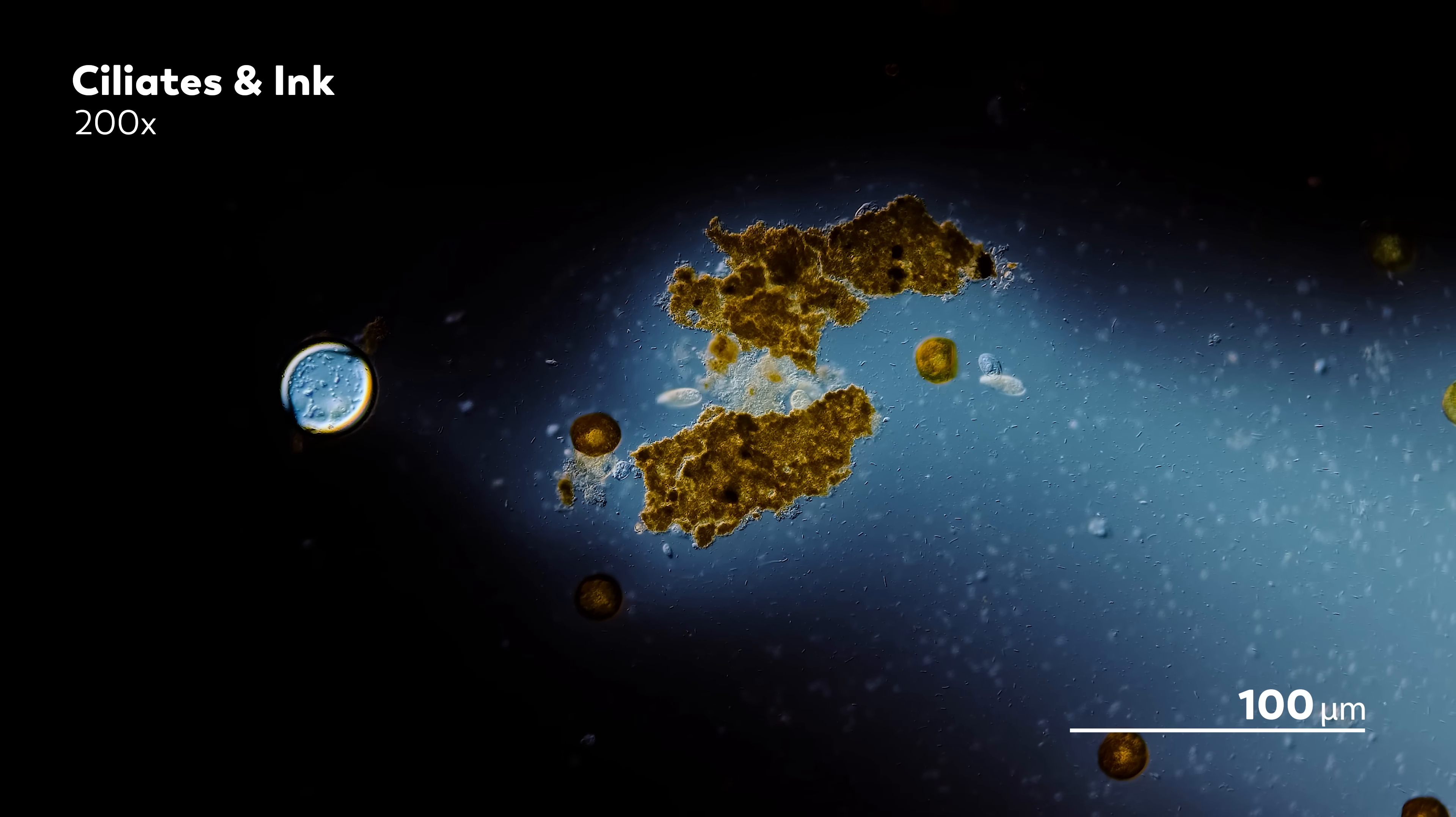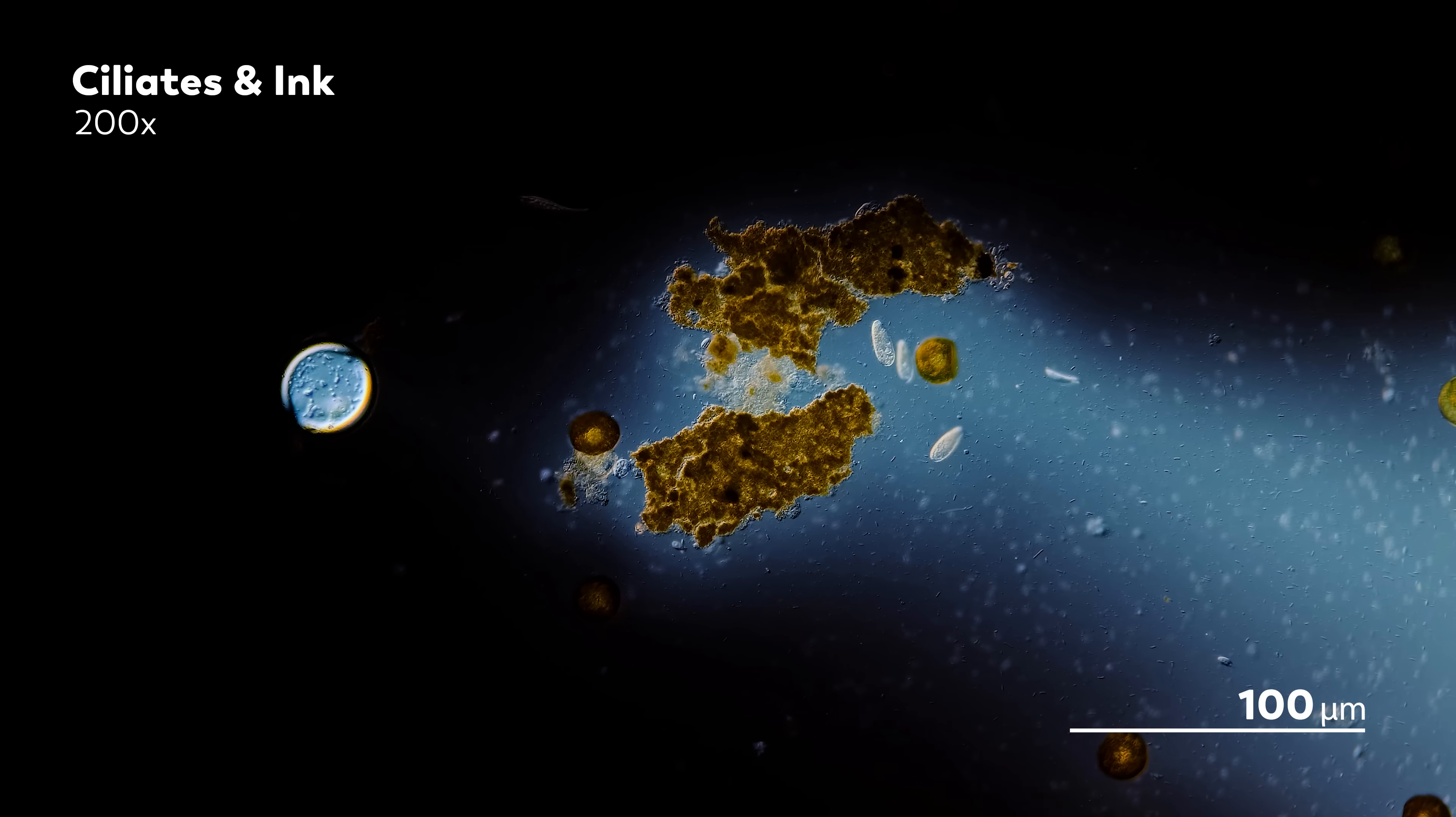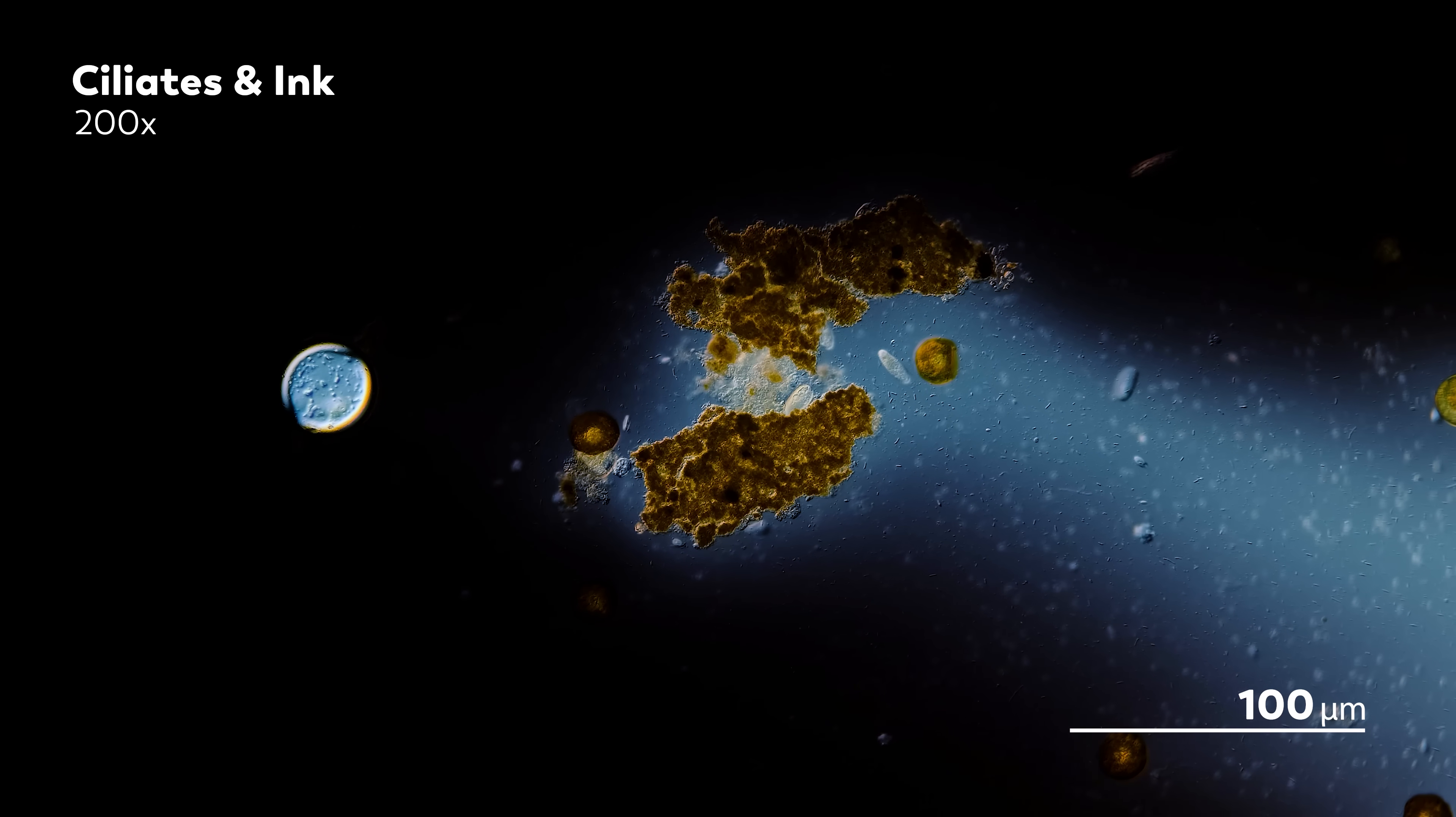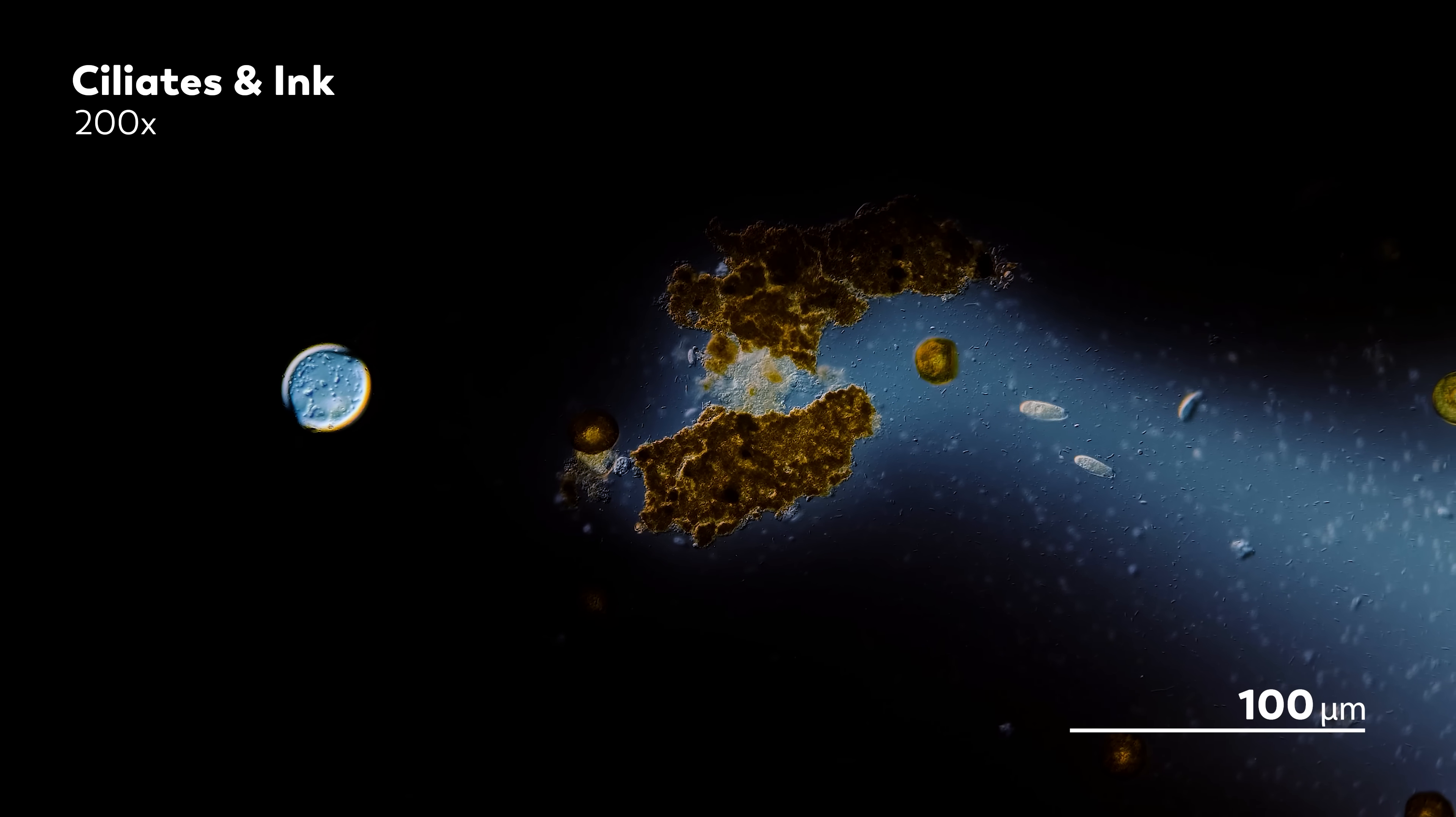Of course, that's not exactly what the paramecium was doing. It was just an organism splashing around in some ink. But there was an artistry to Jennings' work. In one paper, he mentions that he found India ink to be preferable to other inks like carmine or indigo, thanks to its color, fineness, and lack of chemical reaction.